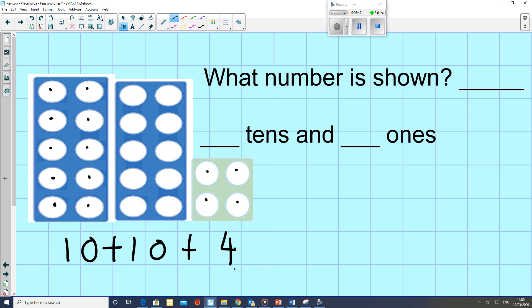So I have 2 full tens. 10, 20. 2 tens equals 20. And I have 4 ones. Let me write that in. So I have 20, 2 tens. I'm going to add them to my 4 ones. And together, they make 24. So the number shown is 24.